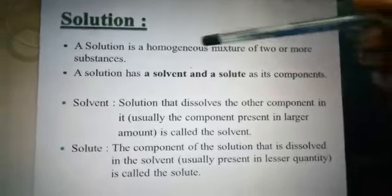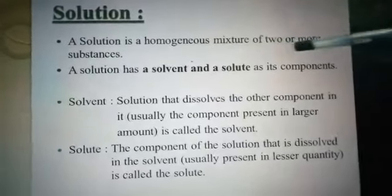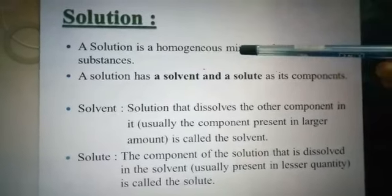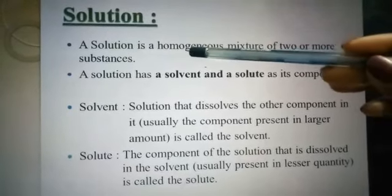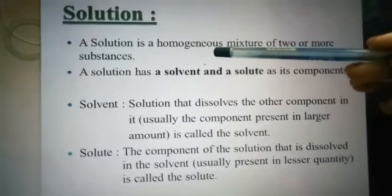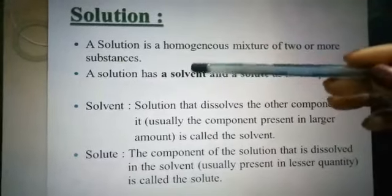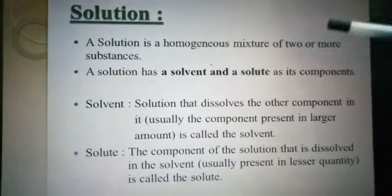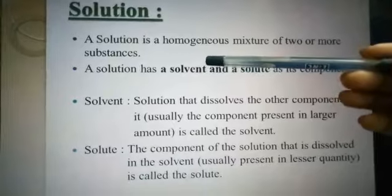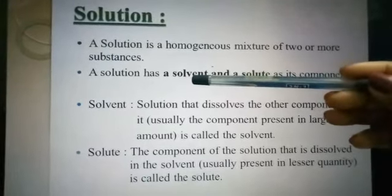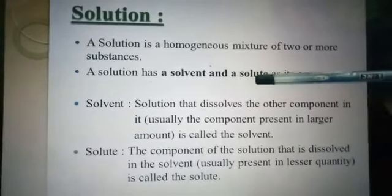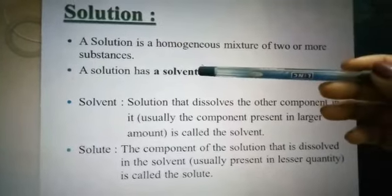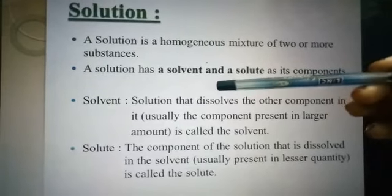First, the definition: a solution is a homogeneous mixture of two or more substances. Homogeneous — 'homo' means same and 'genus' means composition. Two or more substances are present in the solution, and one of them is solvent and others are solute.